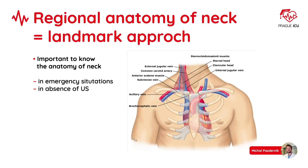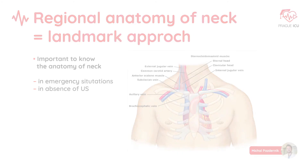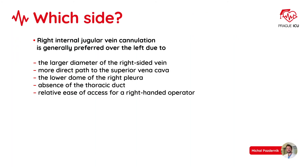We should be familiar with the regional anatomy of the neck for the landmark approach, as it might be useful in emergency situations and in the absence of ultrasound. For internal jugular vein cannulation, we most commonly choose the right side. Because there is usually a larger diameter of the right-sided vein, there is a more direct path to the superior vena cava. We observe a lower dome of pleura, there is no thoracic duct in the way, and it is usually easier for right-handed operators.